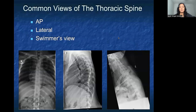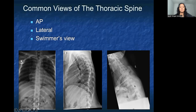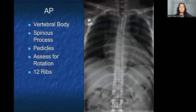When we think about the thoracic spine, the three most commonly obtained views are the AP, which is here on the left, the lateral, which is in the center, and the swimmer's view, which you can see on the right. We're going to take the time to delve into those in depth.